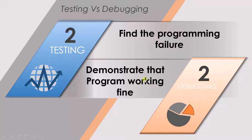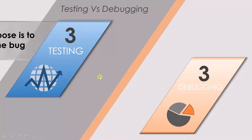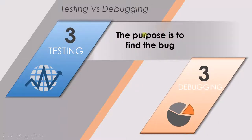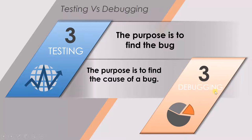The third and last point is that the purpose of testing is to find the bug — that is very clear. Whereas when we are doing a debugging activity, the purpose is to find the cause of the bug. Here we are not just finding the bug, but finding what caused this particular bug.